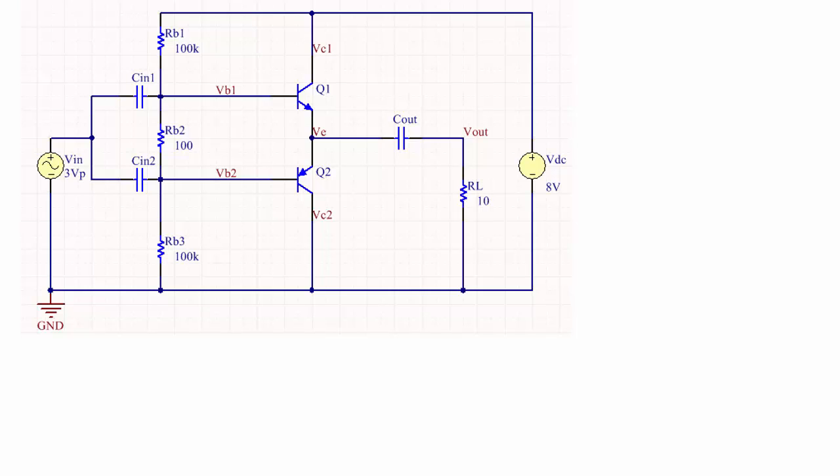Specifically I am going to calculate the efficiency of this class B amplifier that has a 3 volt peak input sinusoid that is split to the base of transistor 1 and the base of transistor 2. You'll notice that I have this biasing resistor between the two bases.